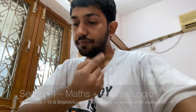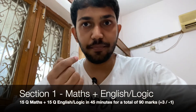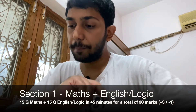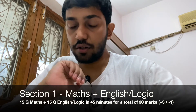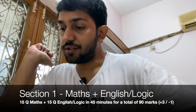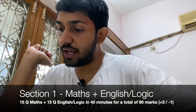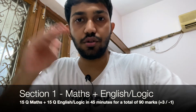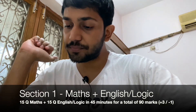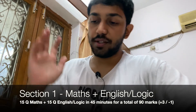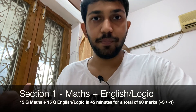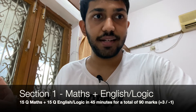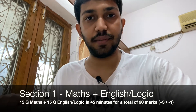There will be three parts to the exam. The first part will be compulsory and you will have Maths, English, and Logic. There will be 15 questions in Maths and 15 in Logic and English, so you'll have 45 minutes to answer all 30 questions, for a total of 90 marks. The marking scheme is plus 3 and minus 1.